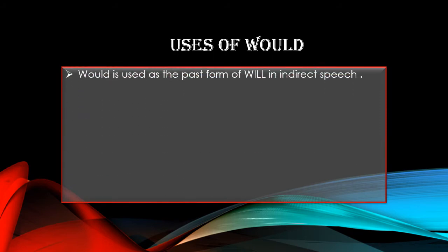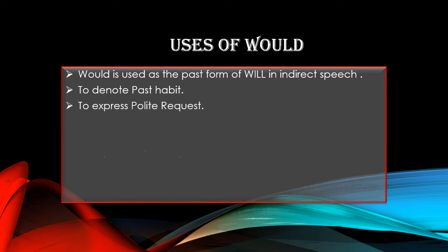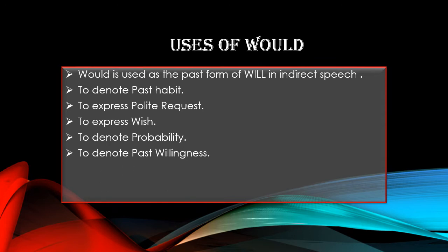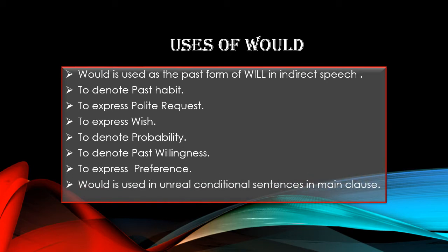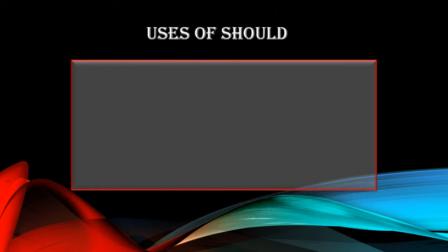Moving to 'would' — first of all, would is the past form of 'will' and it is used in indirect speech, to denote past habit, to express polite request, to express wish, to denote probability and ability, to denote past willingness, to express preference, and in unreal conditional sentences in the main clause.